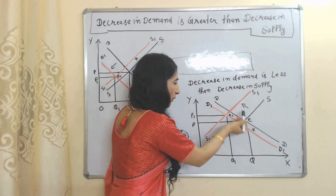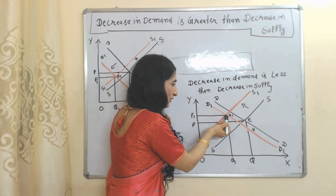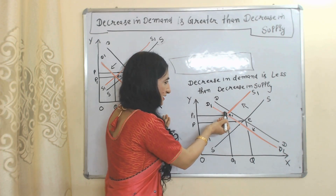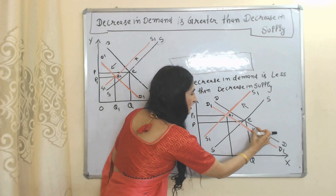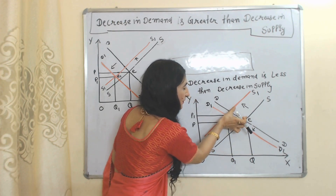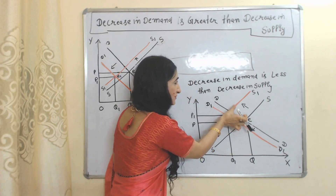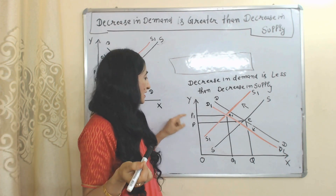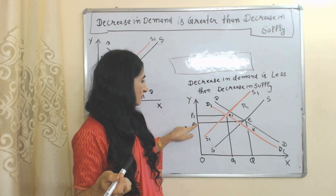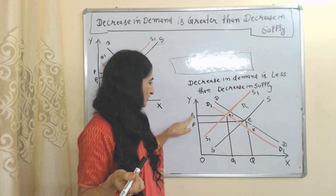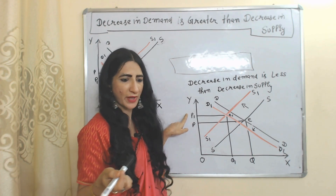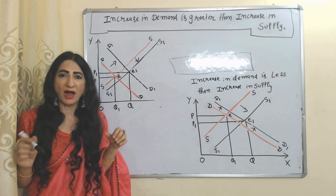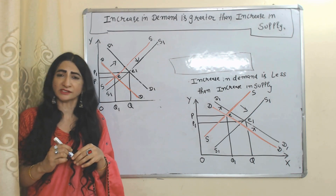Next case: decrease in demand is less than decrease in supply. E is the initial equilibrium point, E1 is the new equilibrium point. At this point, demand decreases only a little bit but supply decreases a lot. That means decrease in demand is less than decrease in supply. In such a case, our prices will increase from P to P1.